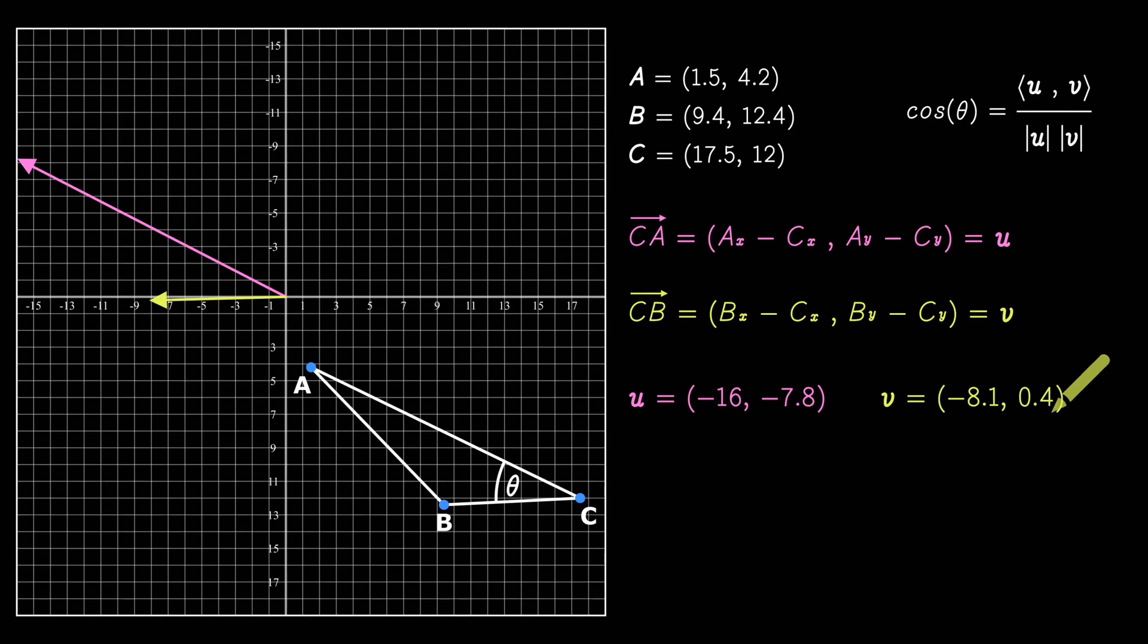Calculate the cosine of the angle with the upper right formula. And then, get the angle with the inverse cosine. And we see that the angle at vertex C is 29 degrees approximately.